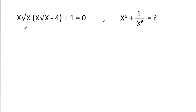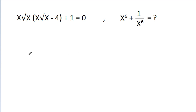In this video, we have given that x√x times (x√x minus 4) minus 1 is equal to 0, and we have to find the value of x power 6 plus 1 by x power 6.